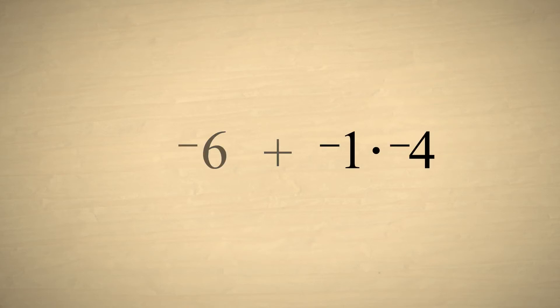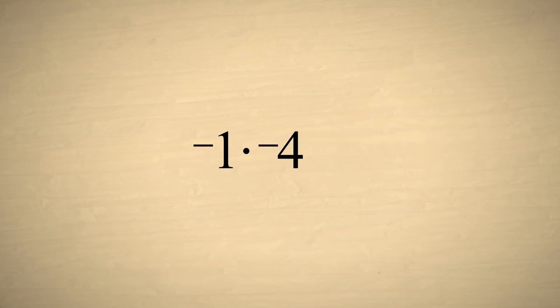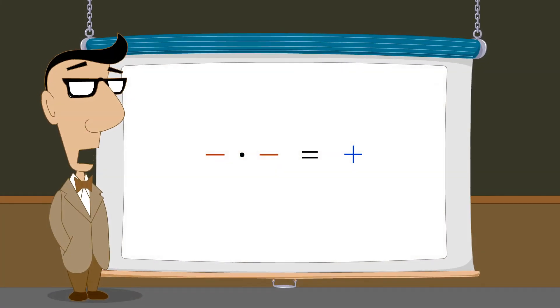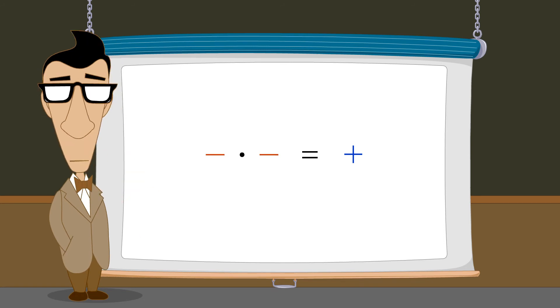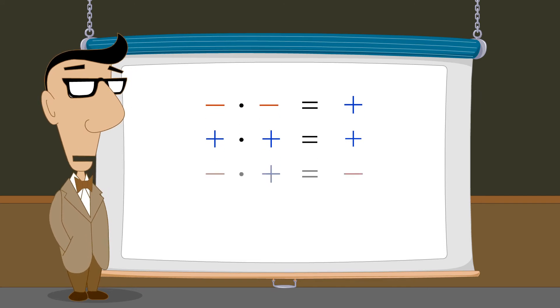So, we get the correct answer if we make the rule that the product of two negative numbers is positive. Now we know what sign the result should be when we multiply two numbers of any sign. Multiplying two numbers with the same sign always gives a positive result, and multiplying two numbers with opposite signs always gives a negative result.